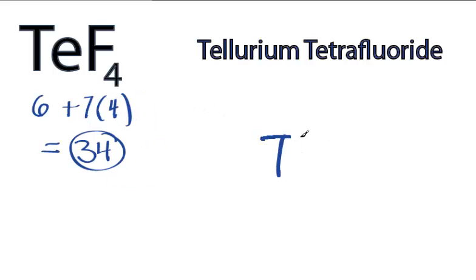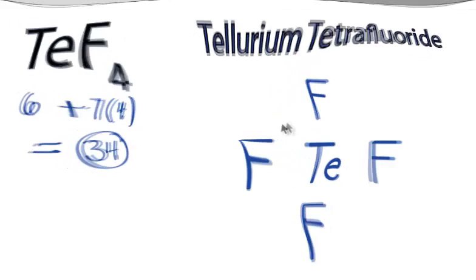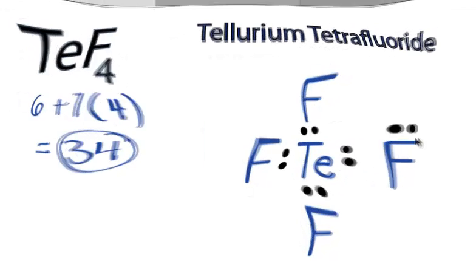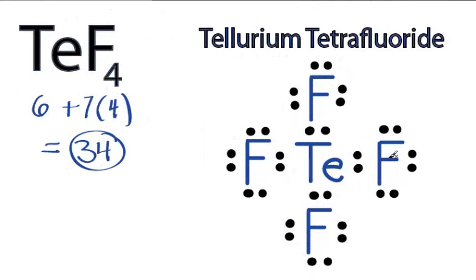Tellurium is the least electronegative — we'll put that in the center and put the fluorines around it. We have 34 valence electrons. We'll put 2 between atoms to form chemical bonds. We've used 8, then around the fluorines, 10, and 32. So we've given everything an octet, but we've not used all 34 valence electrons — we still have a pair left over. We'll put that pair on the central Te atom, like this.